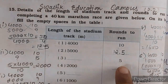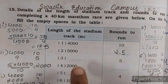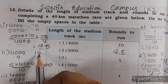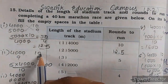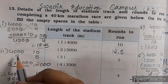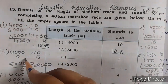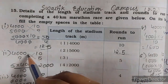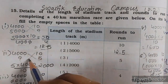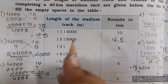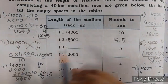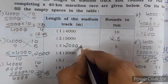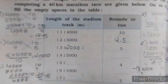Next, aapko batana hai ki 5 rounds maarne padenge to uska kitna distance complete hoga. 4000 ke liye 10 rounds complete karne hain, to 5 rounds ke liye woh kitna distance karega? Again cross multiplication — jis line mein two numbers hain: 4000 into 5 divided by 10. Hamara answer aega 2000. So yahan likhenge 2000 meter.